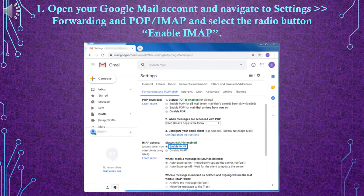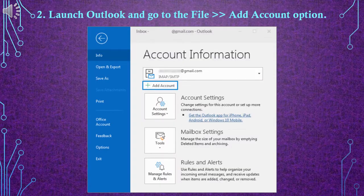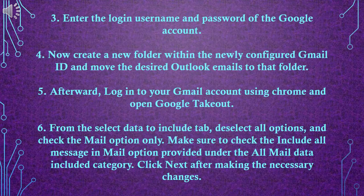Step 1: Open your Google Mail account and navigate to Settings, then Forwarding and POP/IMAP, and select the radio button to Enable IMAP. Step 2: Launch Outlook and go to File, then the Add Account option. Step 3: Enter the login username and password of the Google account.